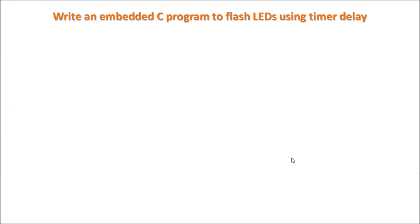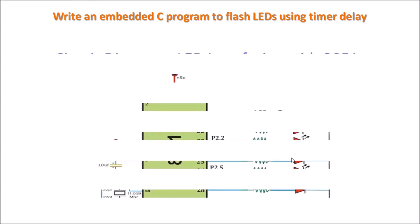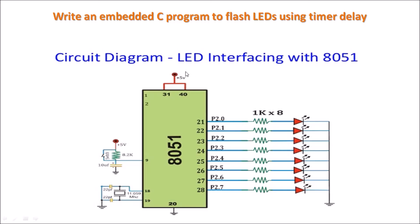We are writing an Embedded C program to flash LEDs where the delay is generated using a timer. This is the same interfacing diagram used to flash LEDs with a simple for-loop delay. At port P2, 8 LEDs are connected; the reset circuit, crystal circuit, VCC at +5V, and pin 20 to ground are also connected.